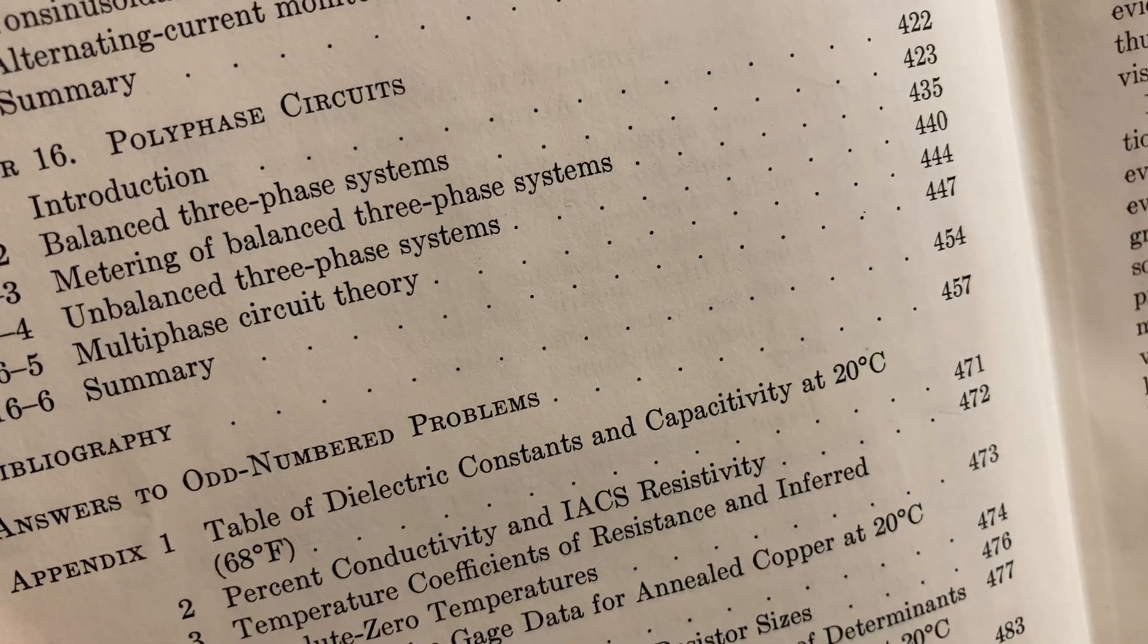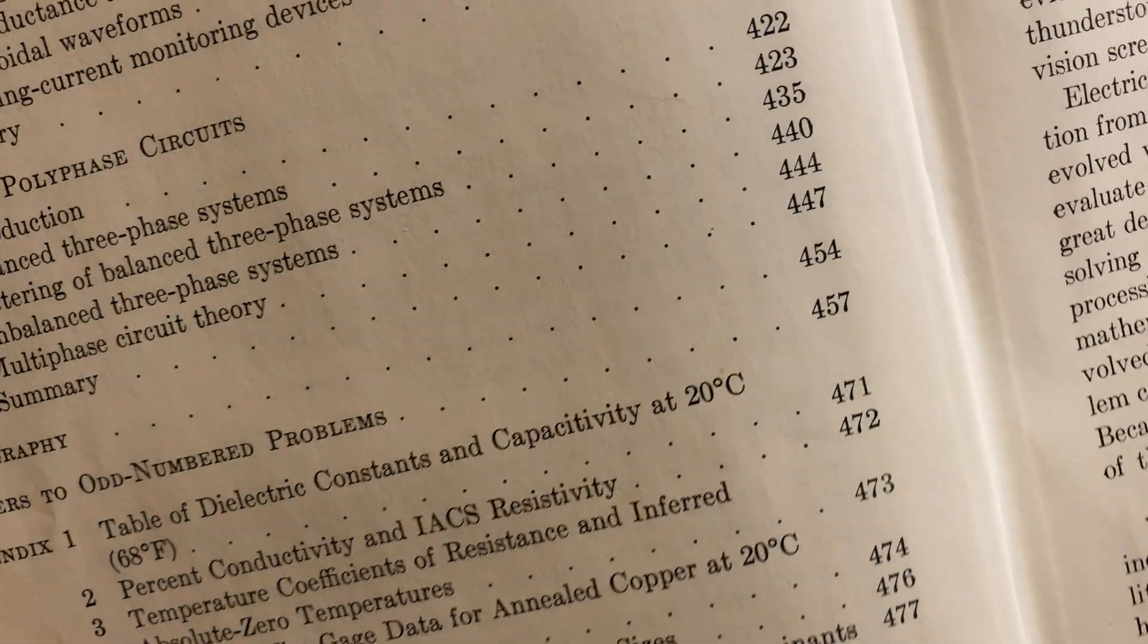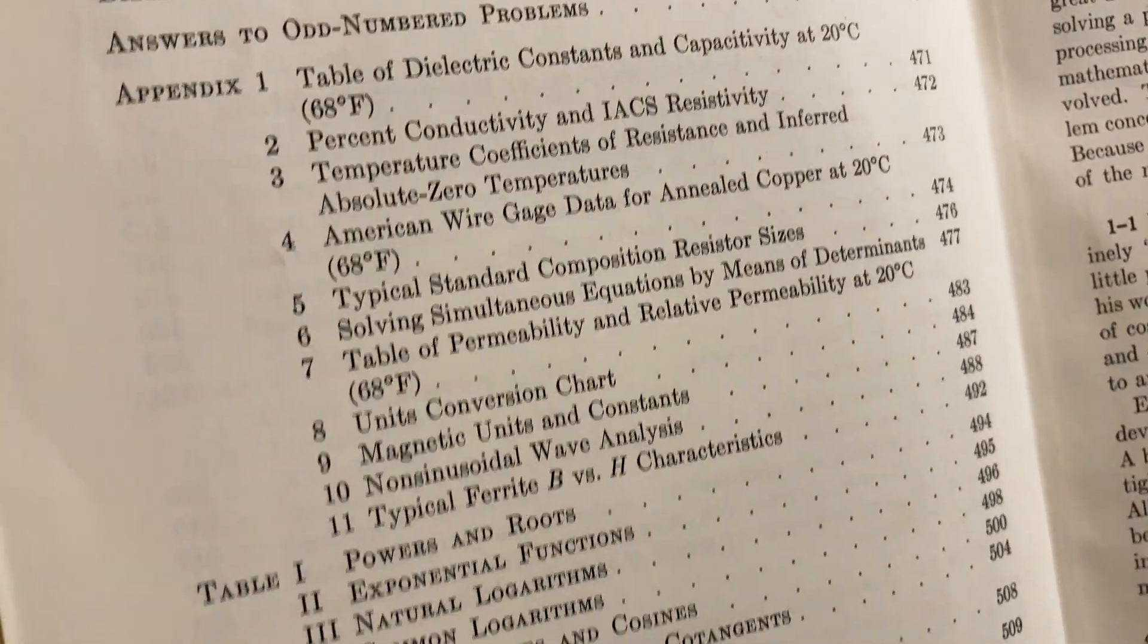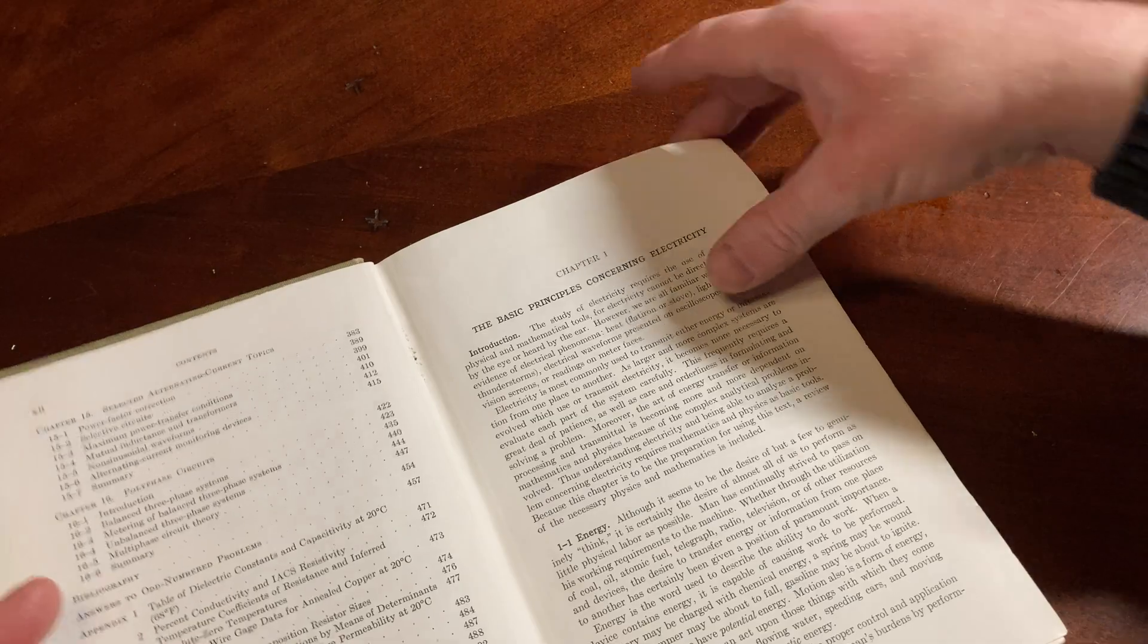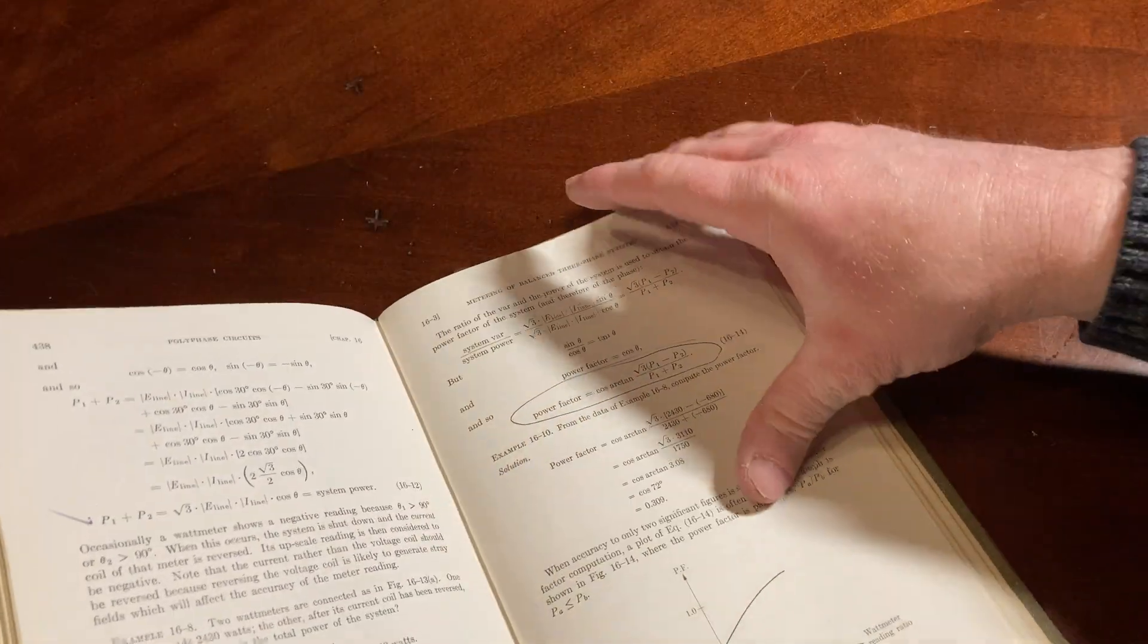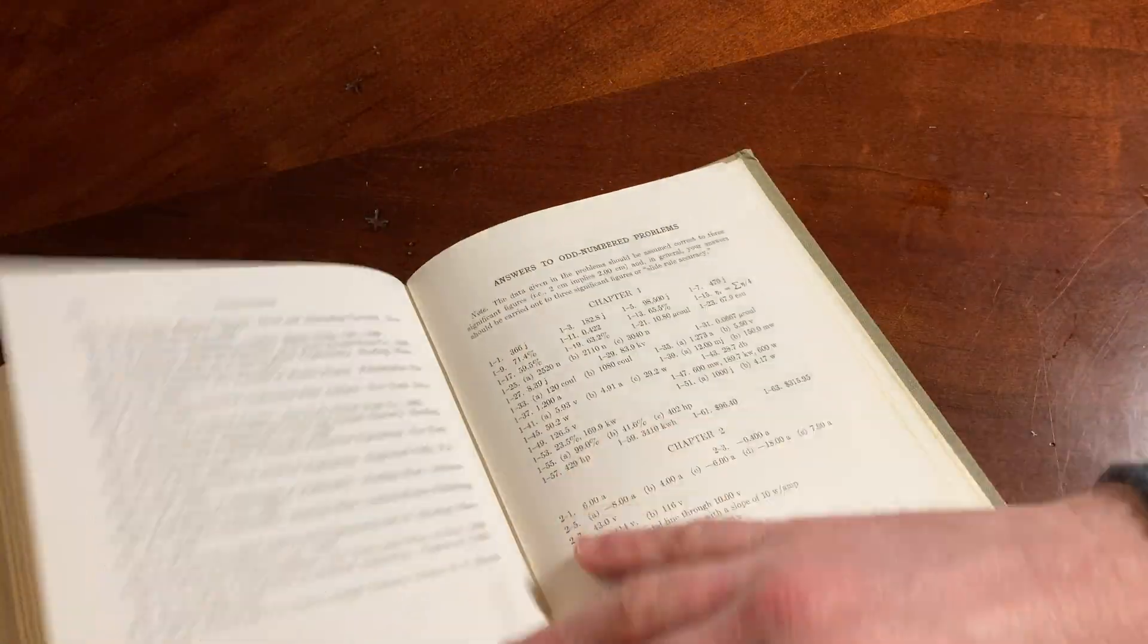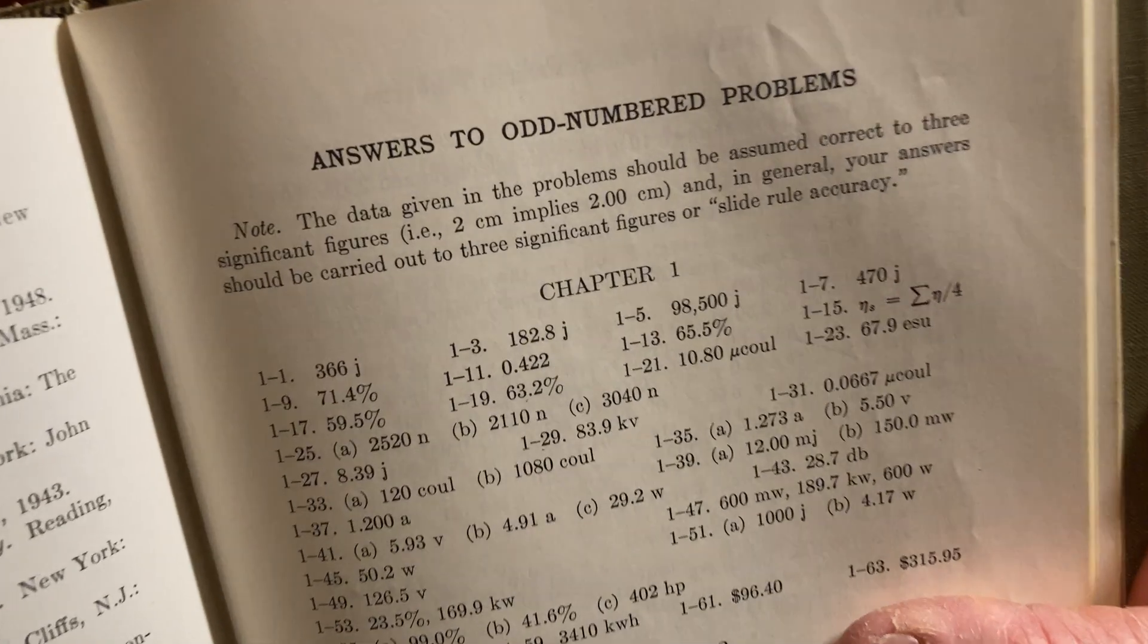Answers to Odd-Numbered Problems, page 457. We should check that first just to see, are they really there? So let's see. 457. I mean, I'm sure they are there, but what do they look like? Answers to Odd-Numbered Problems. Here we go.